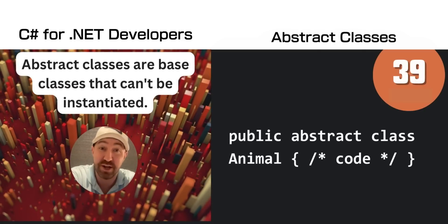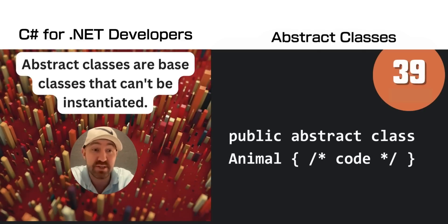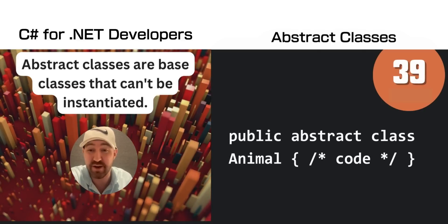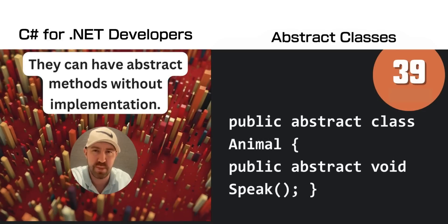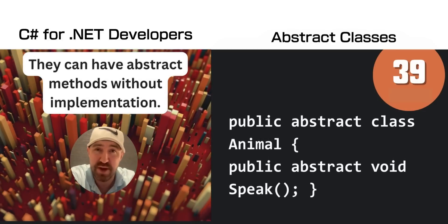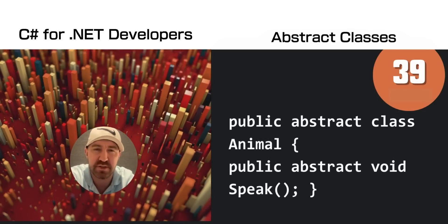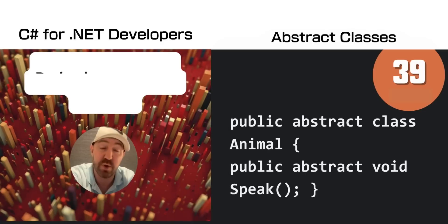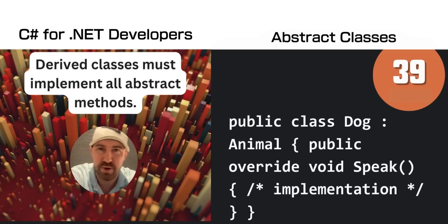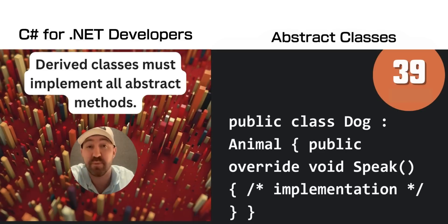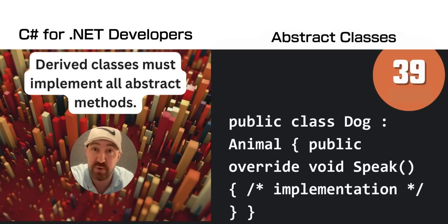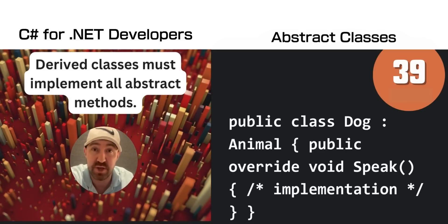In C#, abstract classes are base classes that cannot be instantiated and must be inherited from to use. Abstract classes can have abstract methods, which act a little bit like an interface in that there is no implementation. Here is an example of that Dog class again, where it has to implement the Speak method using the override keyword.